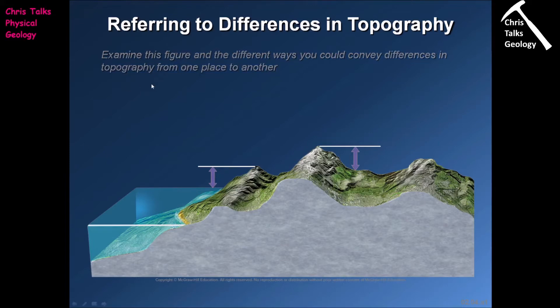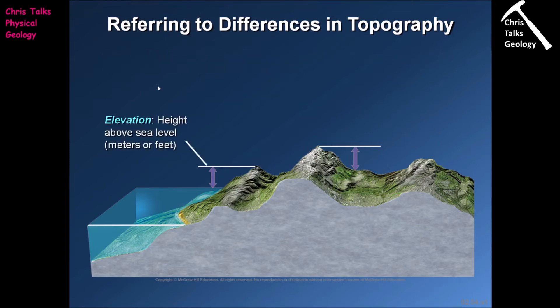The first term, and probably the one you're going to be most familiar with, is elevation. Elevation is defined as the height of a location above sea level. Depending on where you are in the world, the units will differ — in the United Kingdom you'd measure it in metres above sea level, in the United States you'd use feet above sea level. Always check the units so you know what you're dealing with.